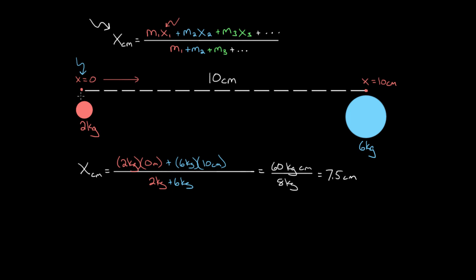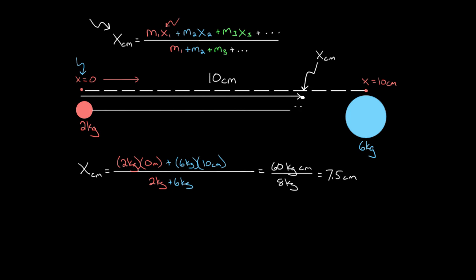That gives us 7.5 centimeters. So the center of mass is 7.5 centimeters from the point we called x equals zero, right here — that's the location of the center of mass. In other words, if you connected these two spheres by a light rod and put a pivot right there, they would balance at that point.